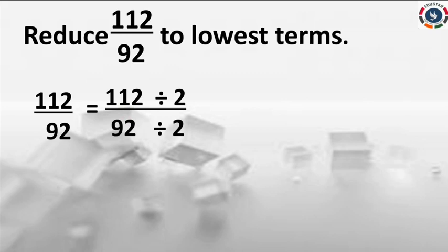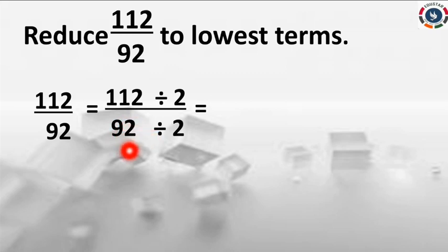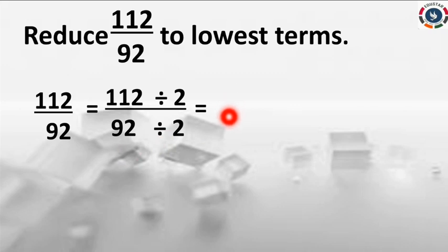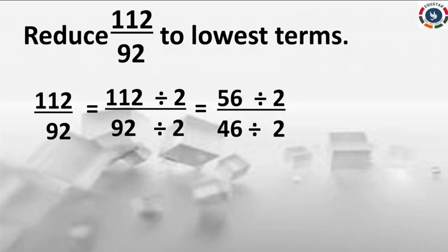Now divide 92 by 2. Take 9 — how many times does 2 go into 9? 4 times. 4 twos are 8. Subtract 8 from 9, you get 1 remaining. Write that 1 in front of the next digit 2, making it 12. How many times does 2 go into 12? 6 times. So 92 divided by 2 equals 46. So now we have 56 divided by 46. Then you have to divide the values again.